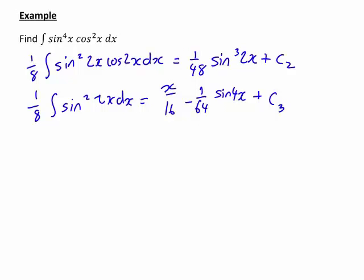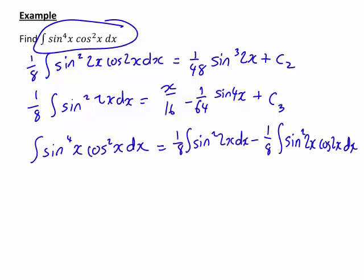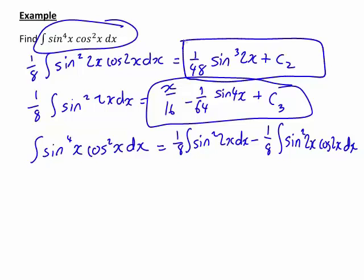But how did all of this fit together? Because remember originally what we were actually trying to find is this. The integral of sin to the 4x cos squared x dx. In actual fact, this is what we had. The integral we were looking for was equal to one eighth times the integral of sin squared 2x dx, which we know is equal to this, minus one eighth times the integral of sin squared 2x times cos 2x dx. And we know that that integral is equal to that result.